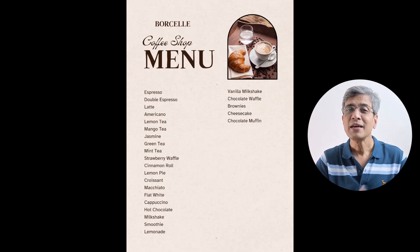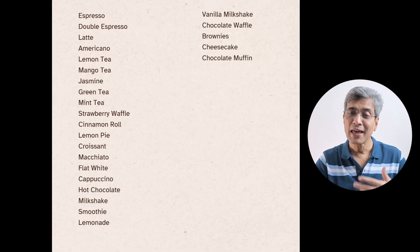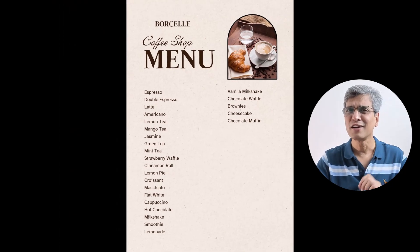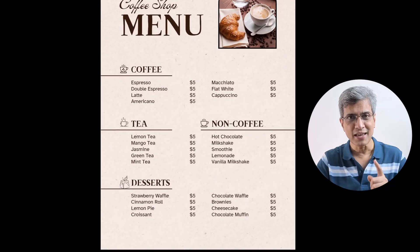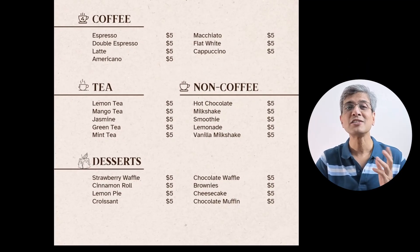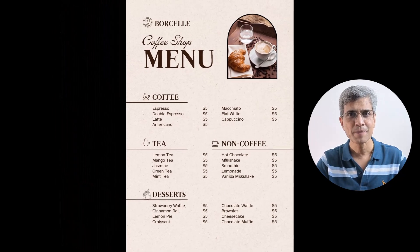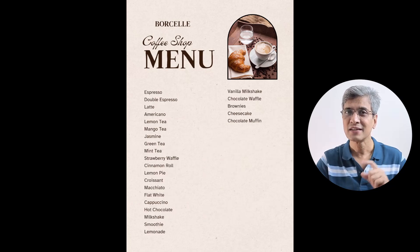Now scene 2. Let us say you visit a coffee shop and someone hands over this menu card to you. Will you feel like placing an order immediately? Chances are that you might be a little confused. Now what if the same set of items are presented like this? Isn't it far more inviting? There is a high chance that you might find it much easier to place your order because the information is organized. So what is the difference between this and this?